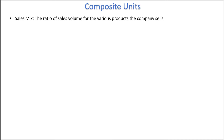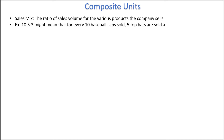Let's say that our company has expanded and now sells top hats and sombreros in addition to their baseball caps. An example of a sales mix might be 10-5-3, meaning that for every 10 baseball caps sold, 5 top hats are sold and 3 sombreros are sold.